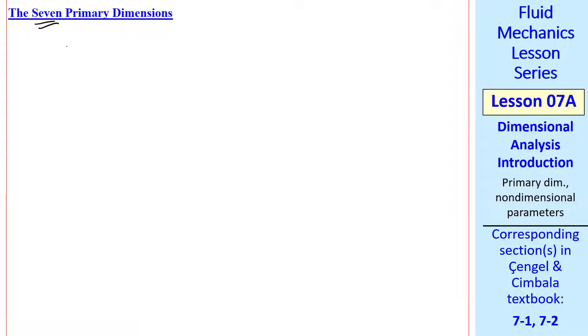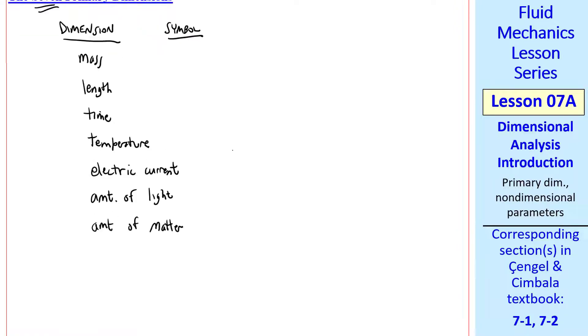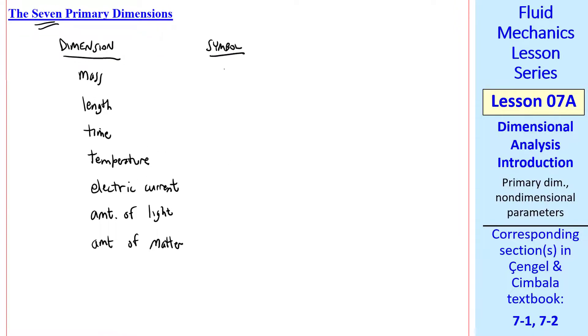There are seven primary dimensions. I'll list them here: mass, length, time, temperature, electric current, amount of light, and amount of matter. The primary dimension symbols are M, capital L, small t, capital T.